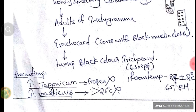Precautions: for Trichogramma japonica, we should not freeze eggs because they are not tolerant to frozen conditions. For Trichogramma brasiliensis, temperature should not exceed 26 degrees Celsius. Room temperature should be maintained at 27 ± 2 degrees Celsius, and relative humidity should always be 65%.